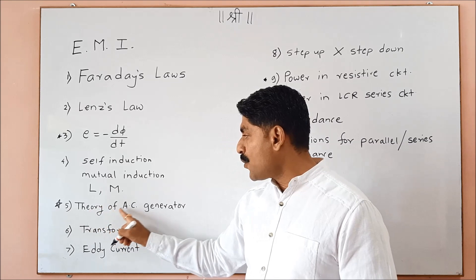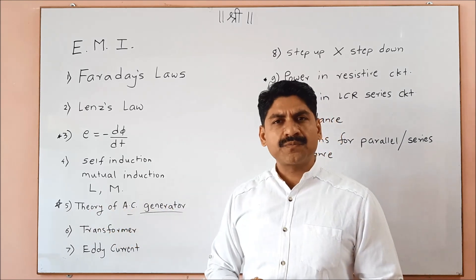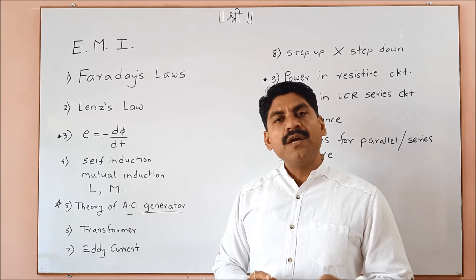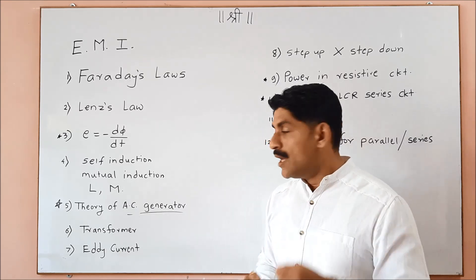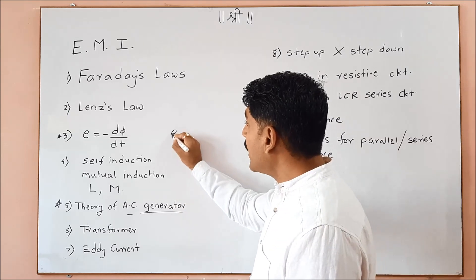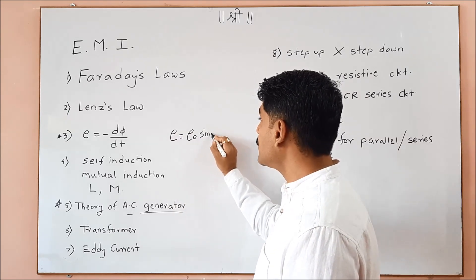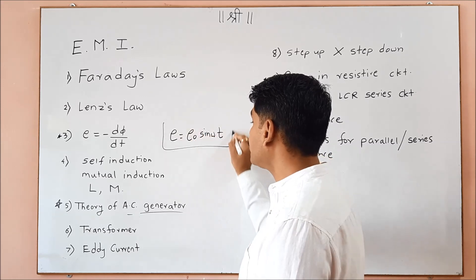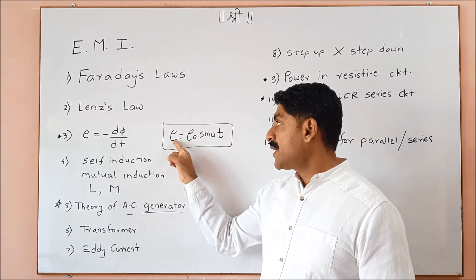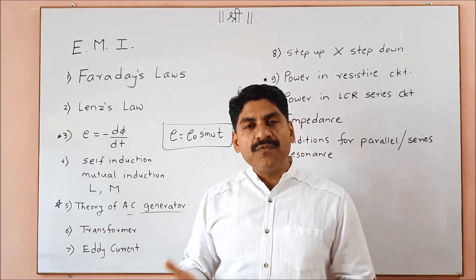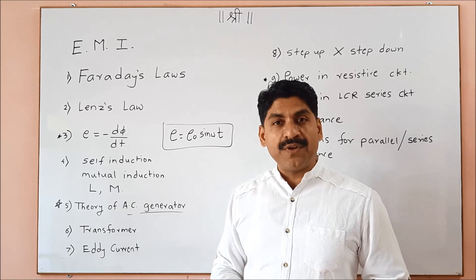The next question is the theory of the AC generator. EMF is induced when you rotate the coil in a magnetic field. What do you say about E equals to E₀ sin(ωt)? The derived expression of EMF induced in a coil rotating in a uniform magnetic field — that's a question.